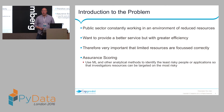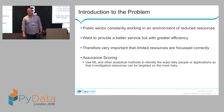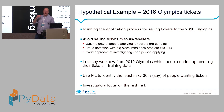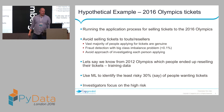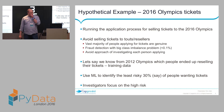I've come up with a hypothetical example to illustrate the technique. Imagine you're running the application process for selling tickets to the 2016 Olympics. The tickets are massively oversubscribed — many more people want tickets than are available. You have an application process: I fill in a form, say I'm Matt Thompson wanting 10 tickets to see the fencing, and submit. The system has to figure out who should get tickets and who shouldn't, and the vast majority of people will be completely genuine.